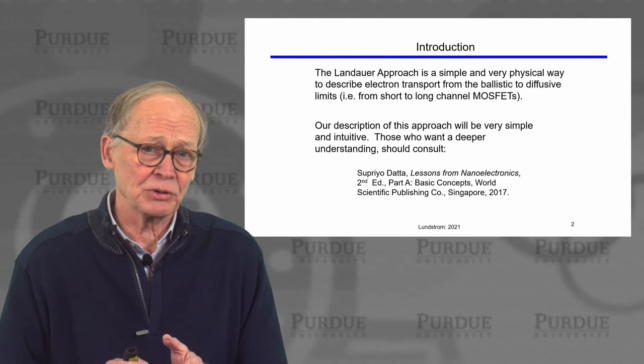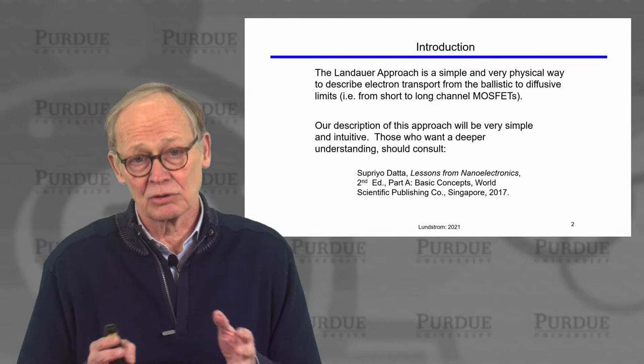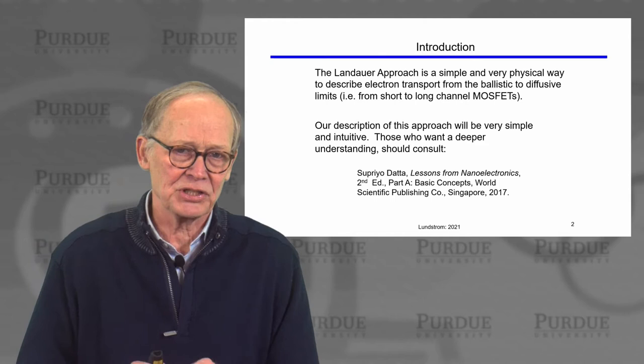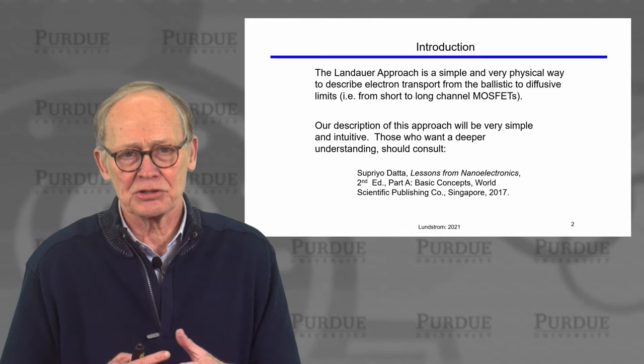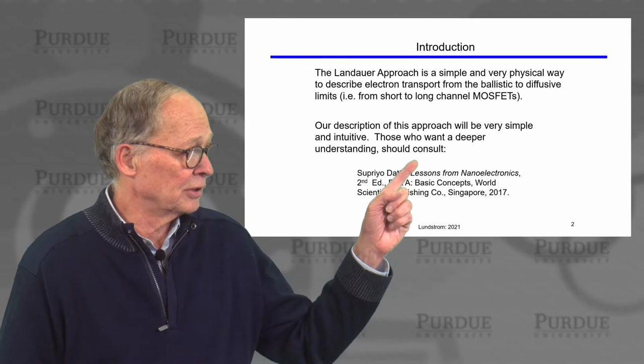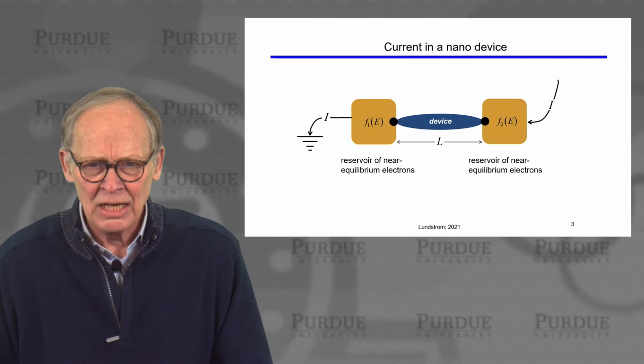This is a very simple and intuitive way to describe electron transport. It works in very short MOSFETs, where the transport is ballistic, and it works in very long channel MOSFETs, where the transport is diffusive. Our description of this approach is going to be very simple and intuitive. There's a lot more that could be said. Those of you interested in diving deeply into electron transport at the nano and molecular scale, I can refer you to a textbook by my colleague Cipriodata.